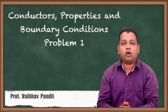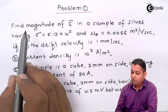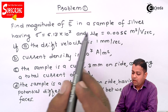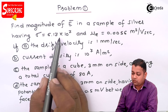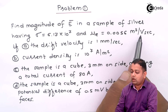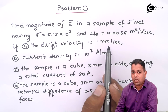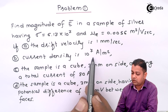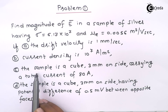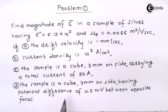Let us begin with solving problem number 1. The statement is: find the magnitude of capital E-bar in a sample of silver, having sigma equal to 6.17 × 10⁷, and mu_e equal to 0.0056 meter square per volt second. We have 4 parts. Part A: drift velocity is 1 mm per second. Part B: current density is 10⁷ ampere per meter square. Part C: the sample is a cube 3 mm on side carrying a total current of 80 amperes. Part D: the sample is a cube 3 mm on side having a potential difference of 0.5 millivolt between the opposite faces.